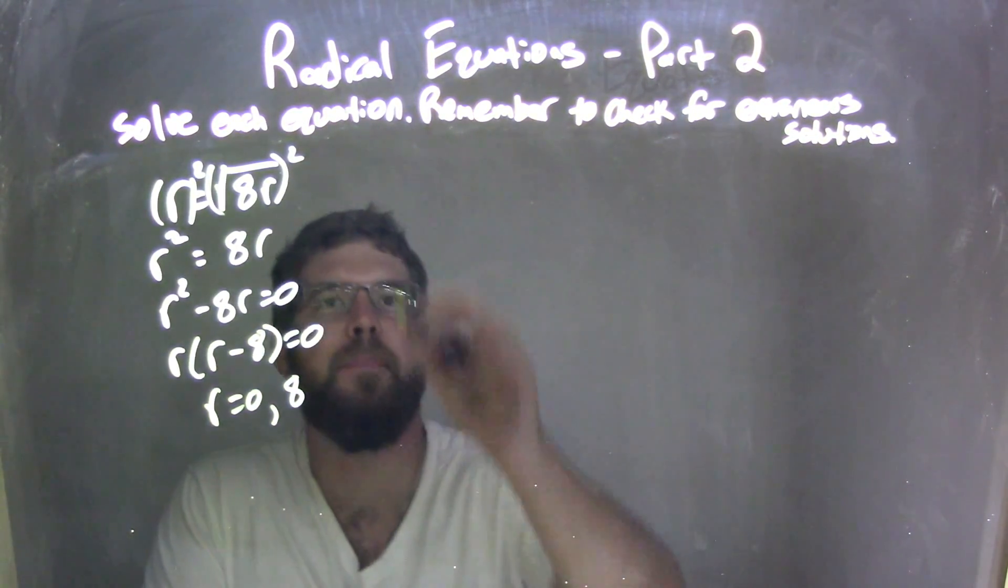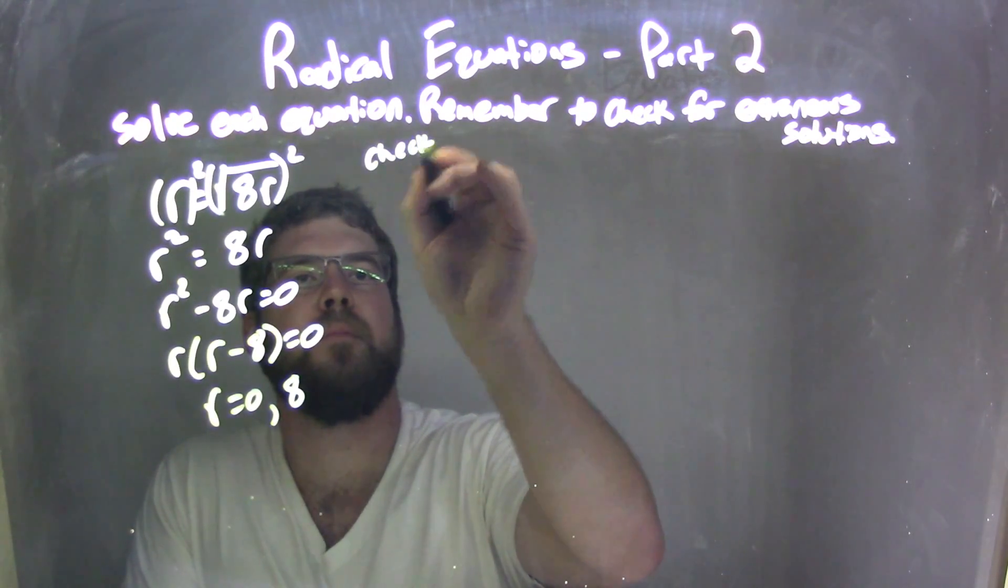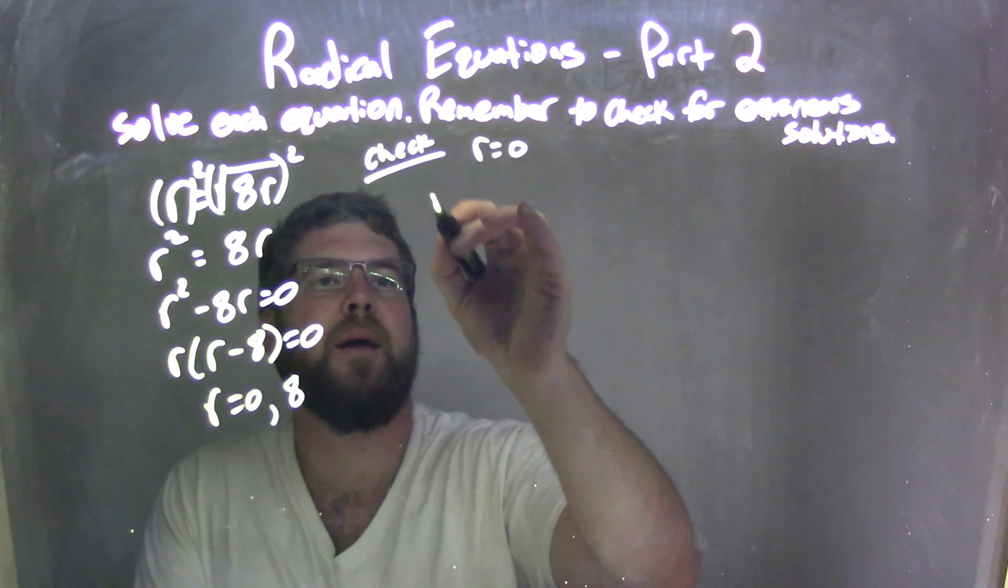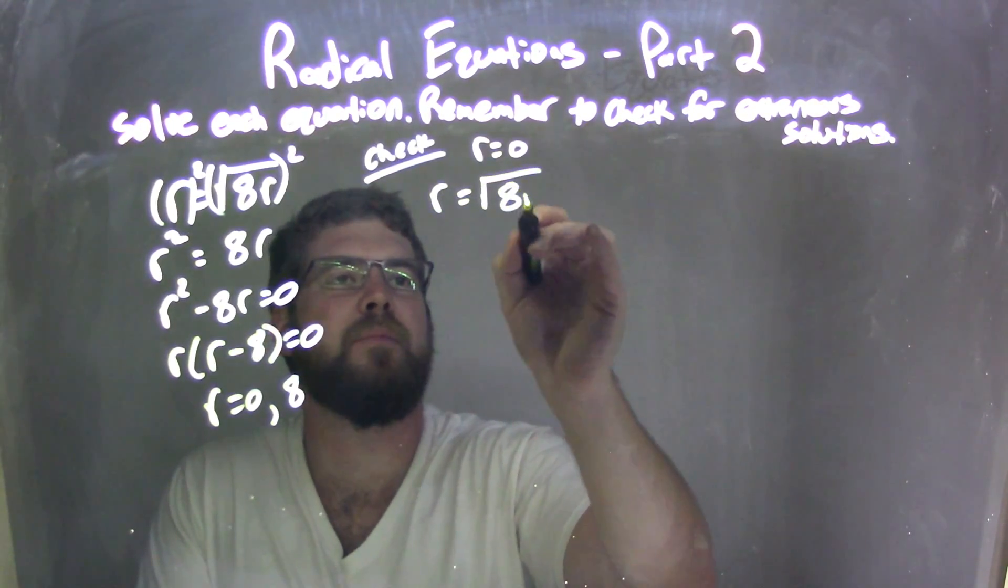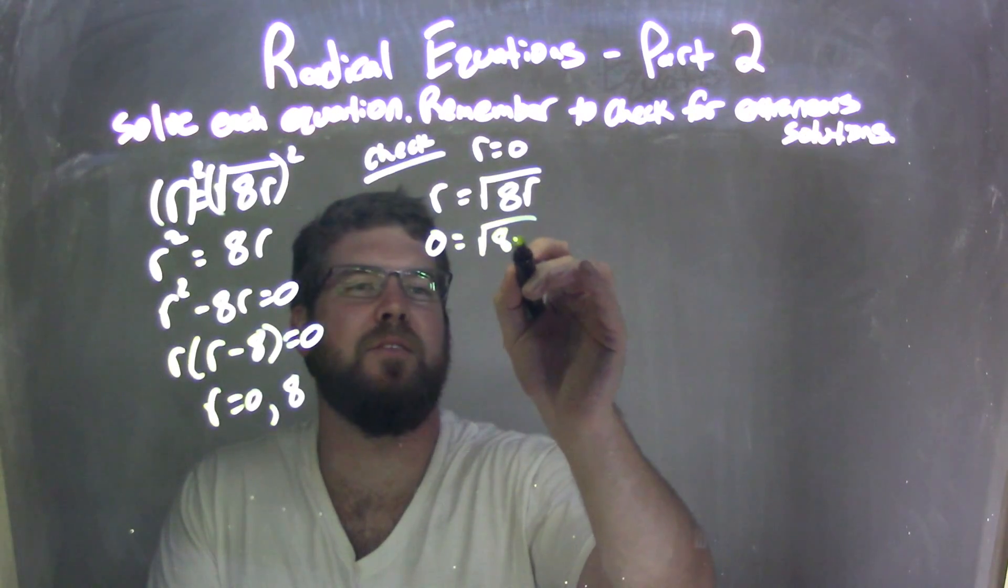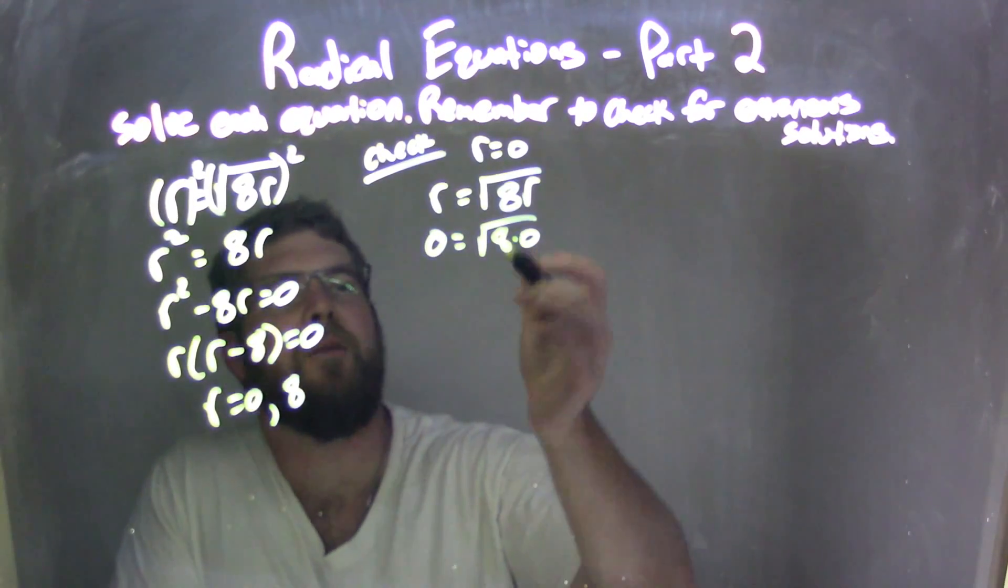So now I need to check both of these. Let's check r equals 0 first. Plug it back into our original equation. 0 in for r. I always love it when it's 0, it makes it easier once you know what you're doing.